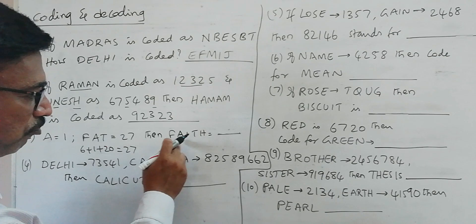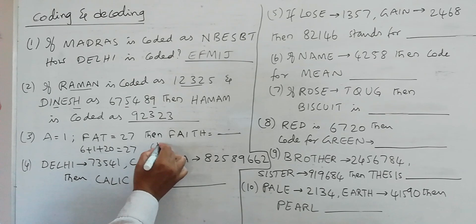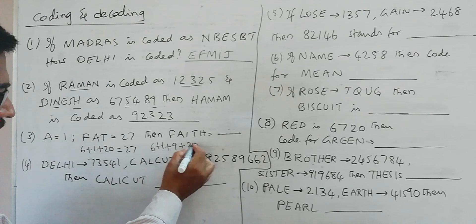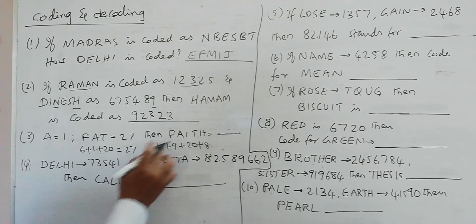Then what will be F plus A plus I plus T plus H? So F is 6, A is 1 plus I, I is 9, T is 20 plus H is 8. So 28, 37, 38, 44. So FAITH is 44.